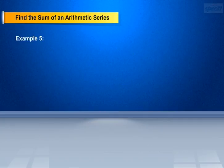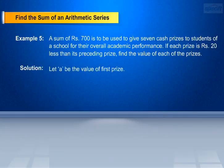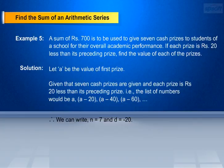Example 5: A sum of 700 rupees is to be used to give 7 cash prizes to students of a school for their overall academic performance. If each prize is 20 rupees less than its preceding prize, find the value of each of the prizes. Solution: Let a be the value of the first prize. The list of numbers would be a, a minus 20, a minus 40, a minus 60, and so on. Therefore, n equals 7 and d equals minus 20.